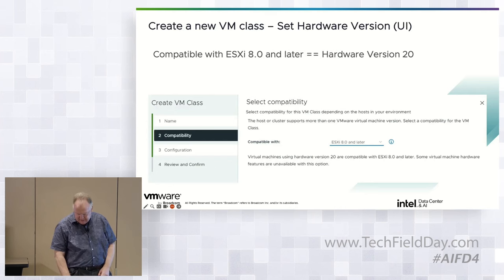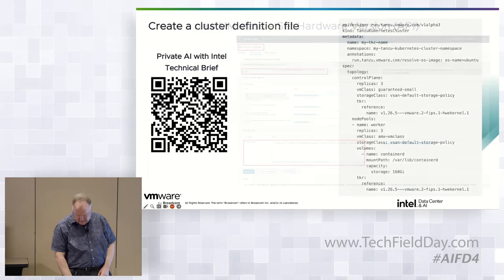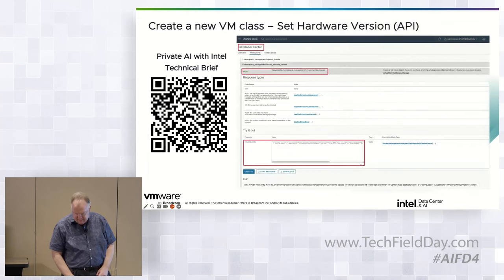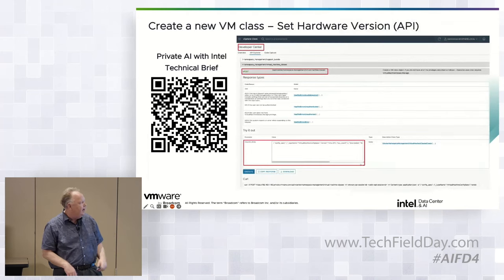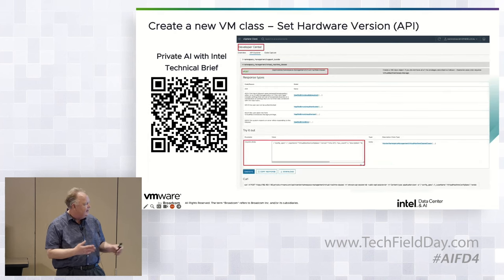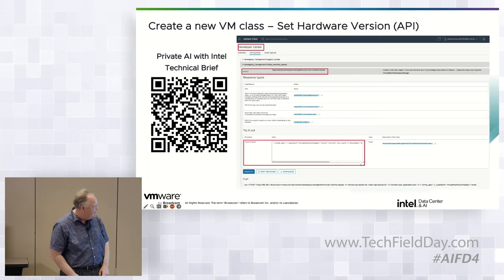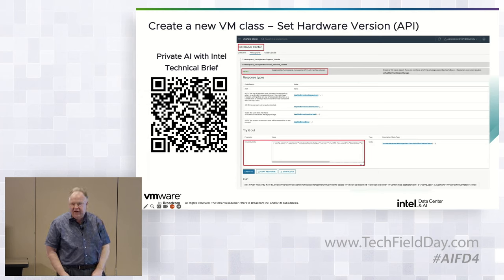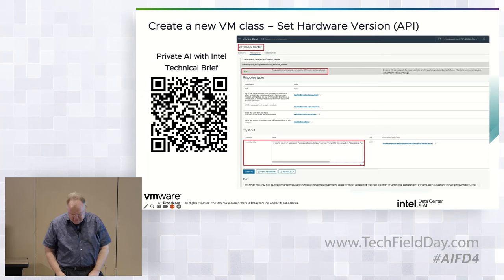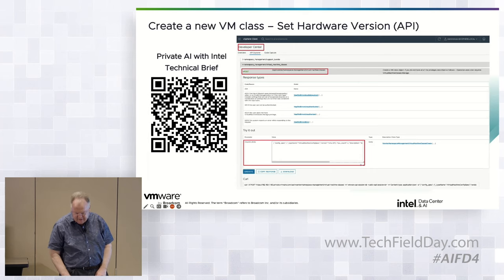In the meantime, if you're doing this today, the API exists to support this — you just have to call it with a specific JSON string. The QR code provides the instructions on what to post, and it will set the VM class to hardware version 20. Setting ESXi 8 or later equates to hardware version 20.